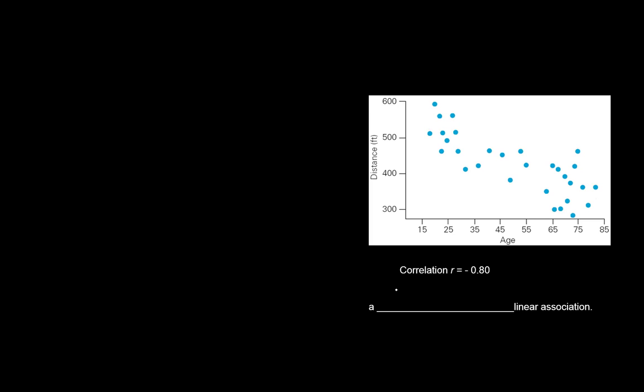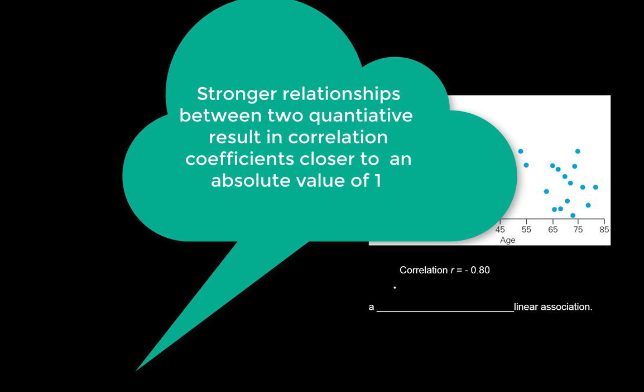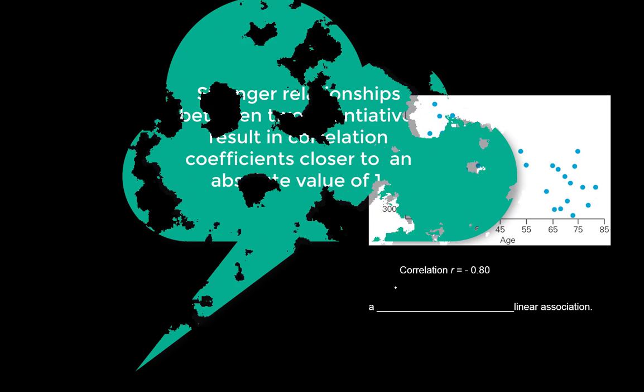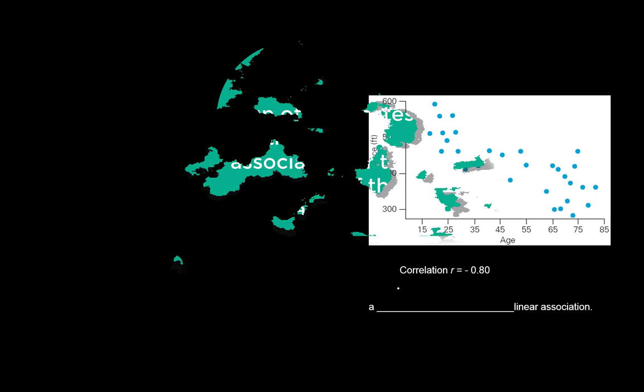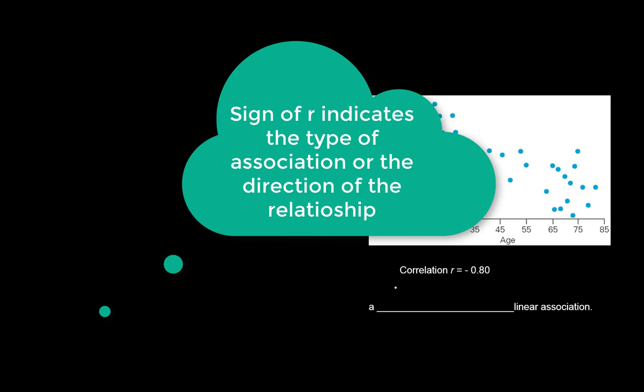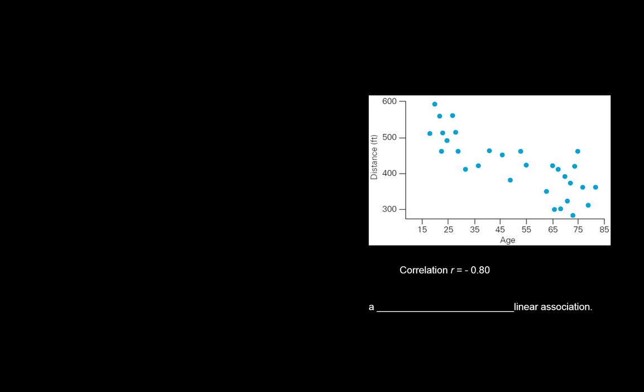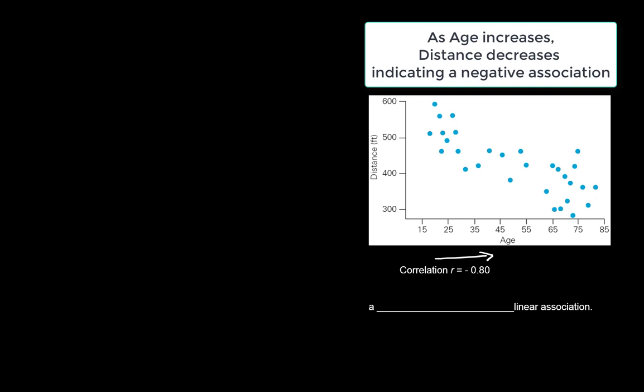A correlation coefficient closer to an absolute value of 1 indicates more strength. The sign indicates the direction of the relationship. Here, as age increases, distance decreases, indicating a negative association. You'll notice the correlation coefficient is negative 0.8.